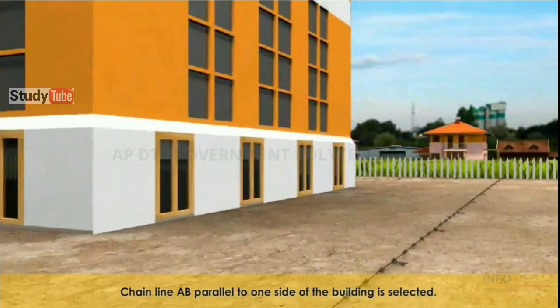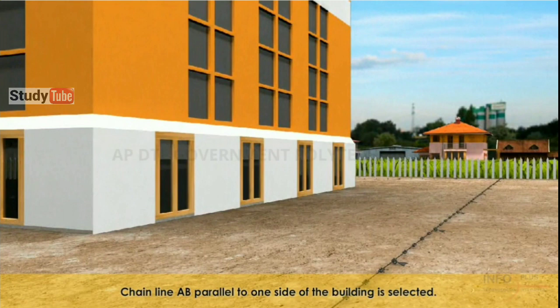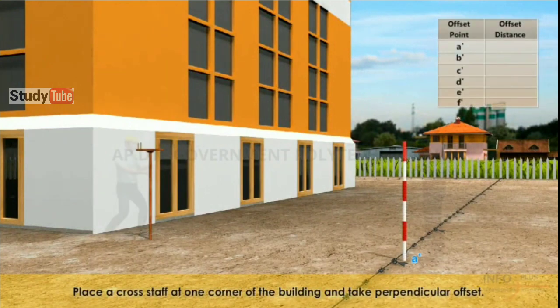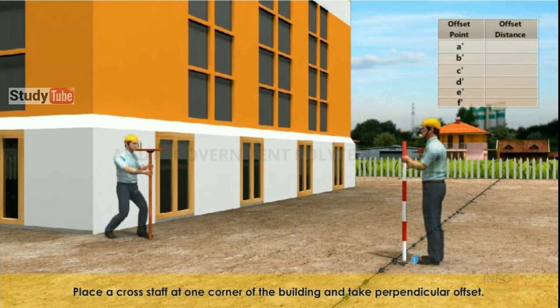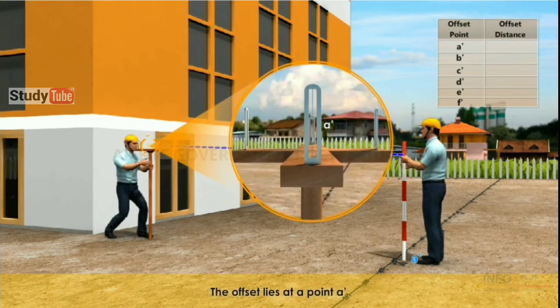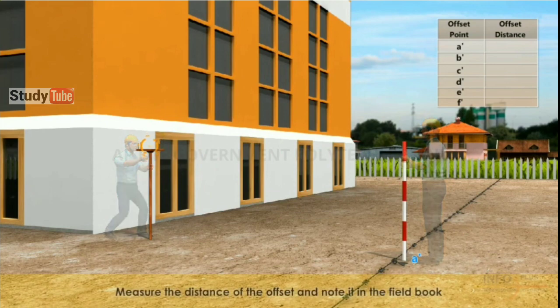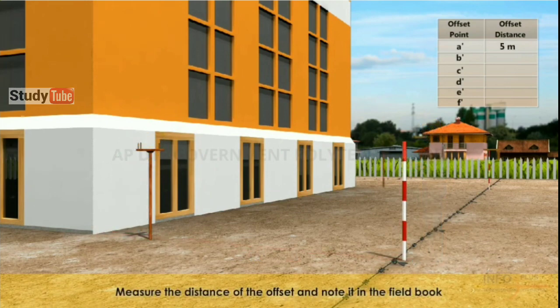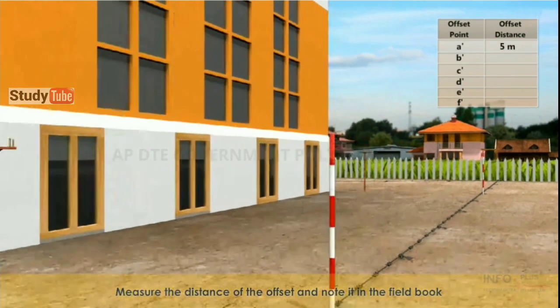Chain line AB, parallel to one side of the building, is selected. A cross staff is placed at one corner of the building and a perpendicular offset is taken. The offset lies at a point A'. The distance of the offset is measured and noted in the field book.